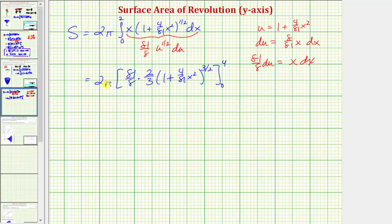Let's go ahead and factor these fractions out. 2 times 81 over 8 times 2 thirds equals 27 halves. So we have 27 pi halves times, when x is 4, we'd have the quantity 1 plus 4 over 81 times 4 squared, raised to 3 halves, minus, when x is 0, we just have 1 to the 3 halves.